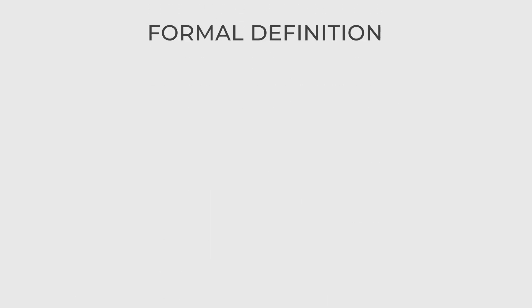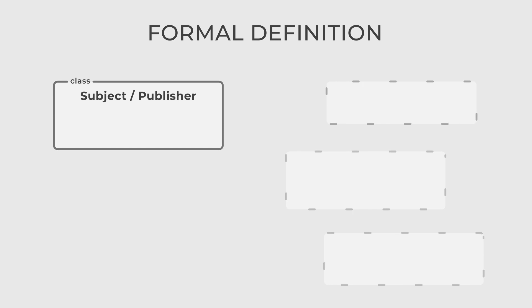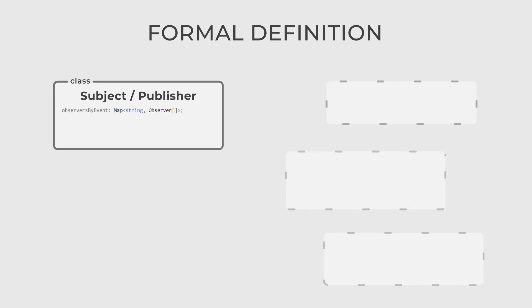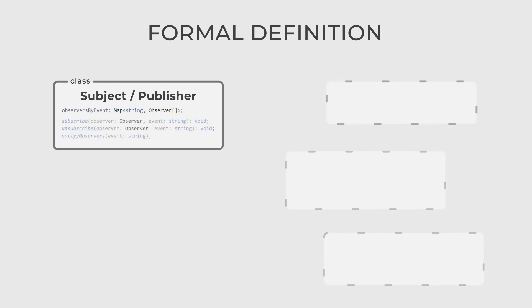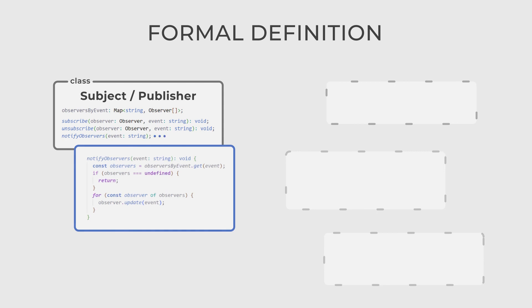Here we have three actors. The first one, the Subject or Publisher, is a class that maintains a list of dependent observers and notifies them of any state changes. It provides methods to attach, detach, and notify observers.